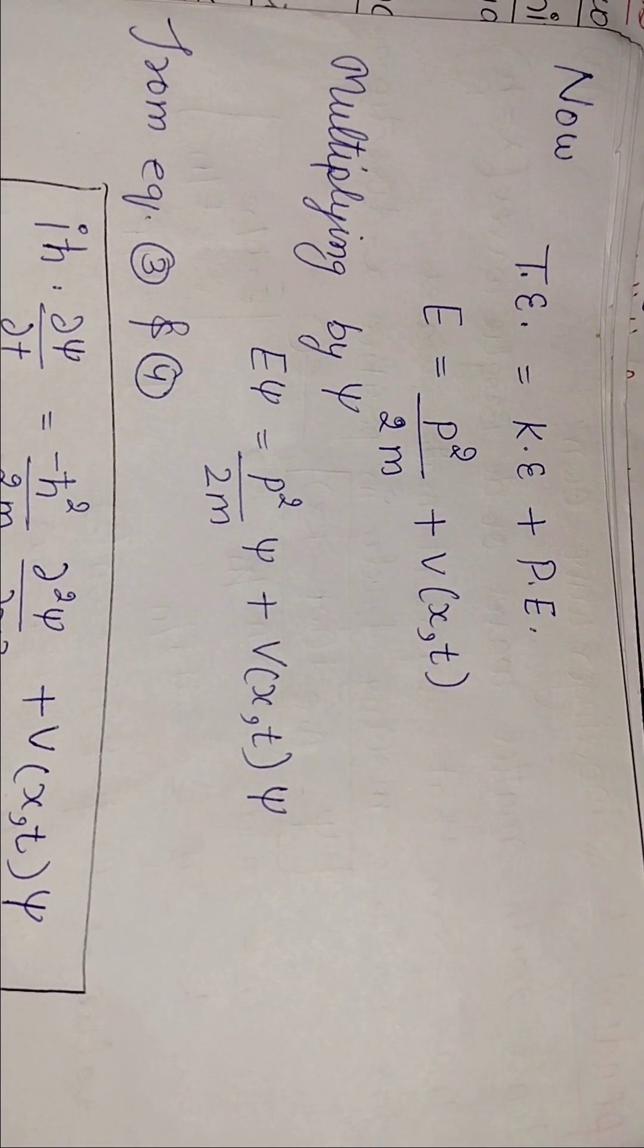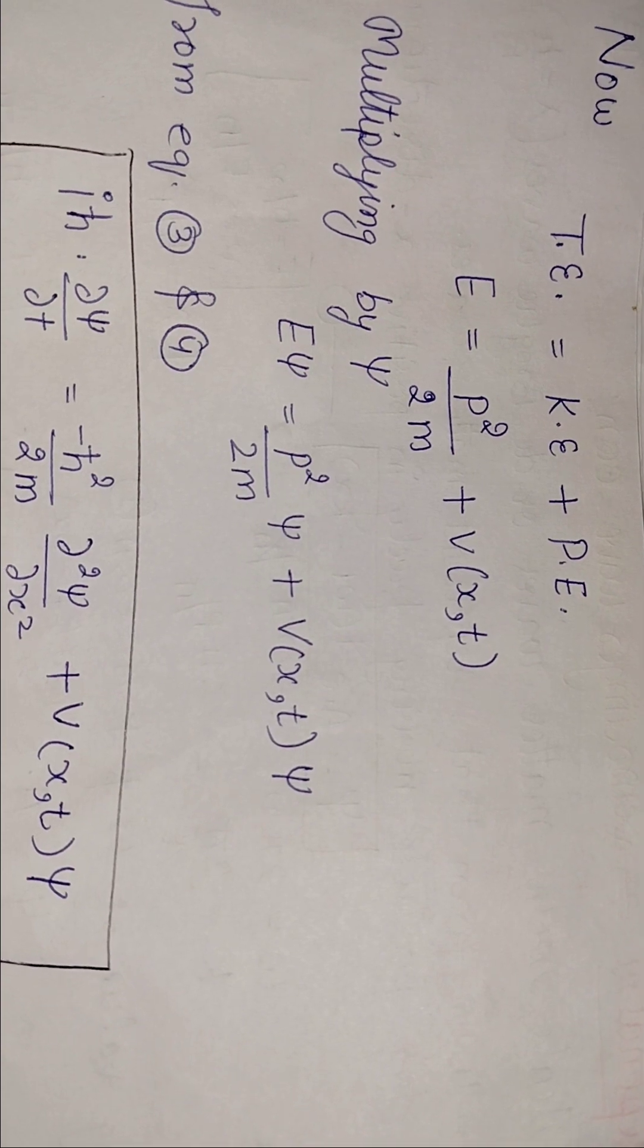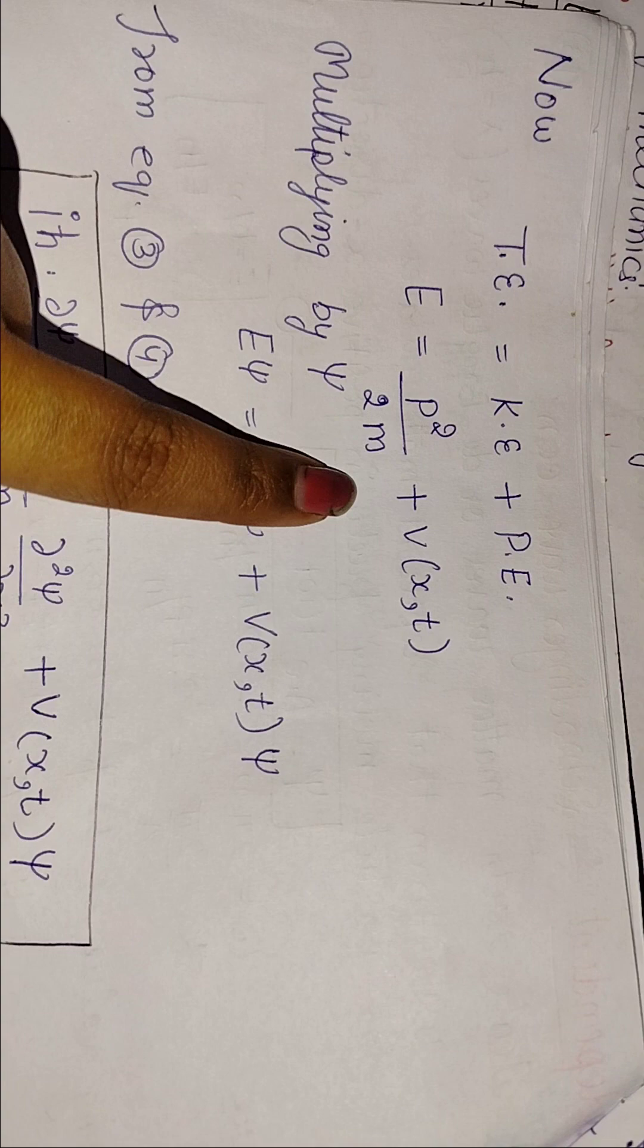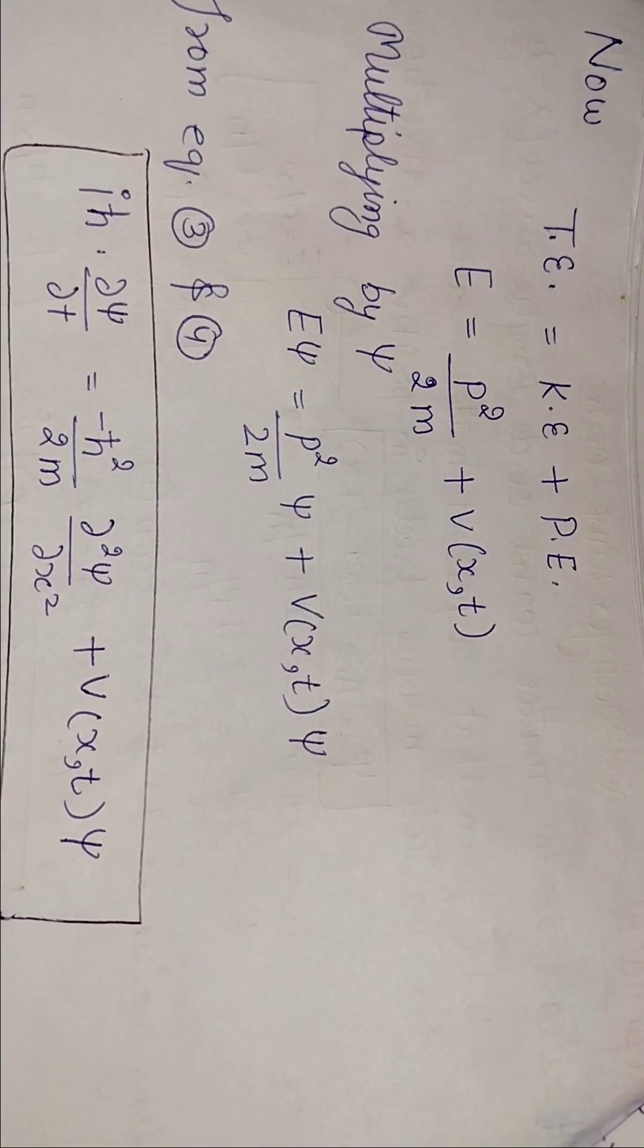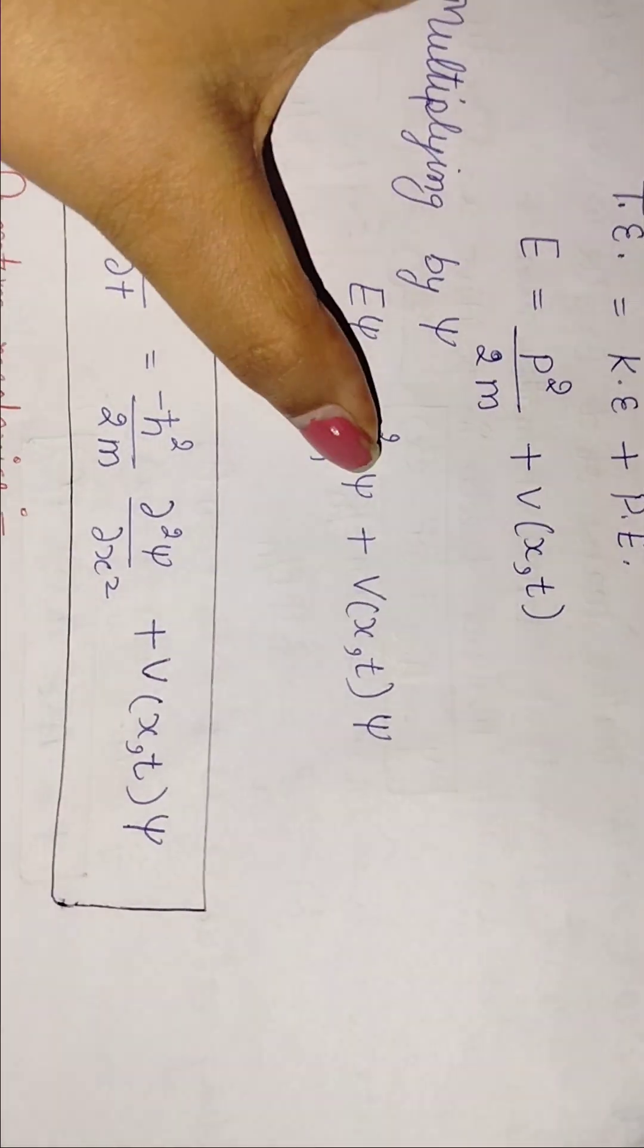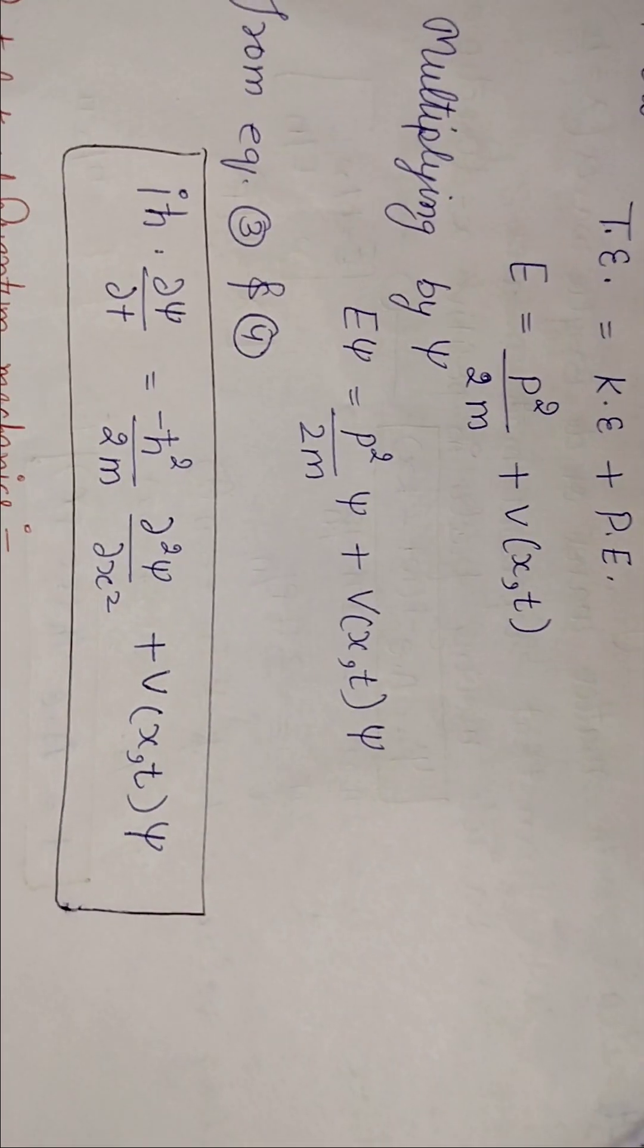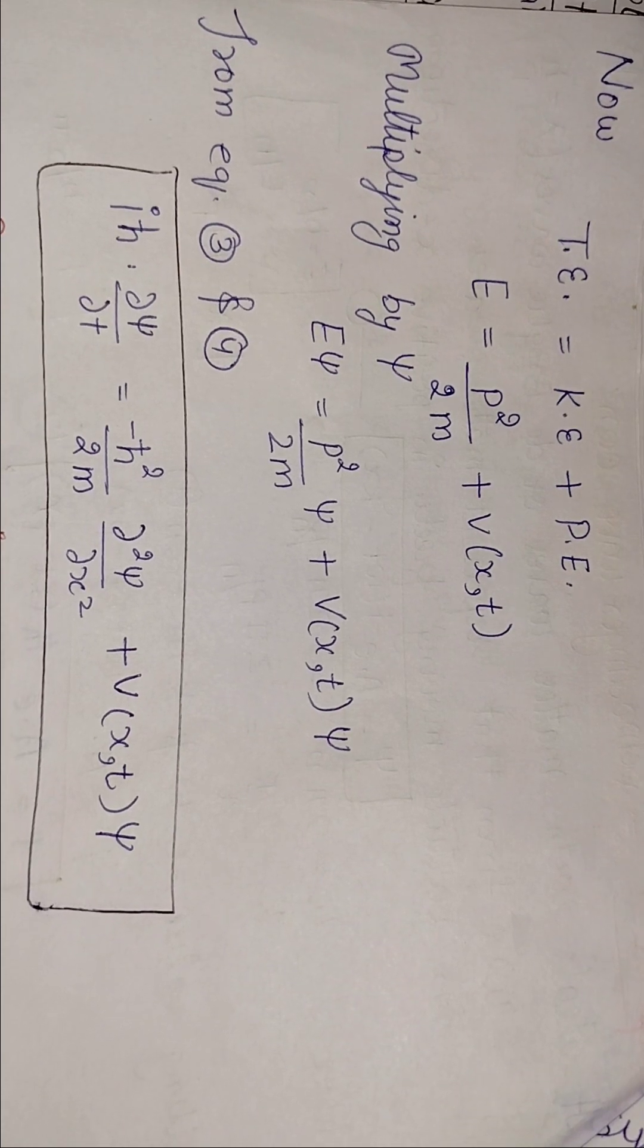Now, we know how much total energy is: kinetic plus potential energy. So we will fill the value of kinetic and potential energy and multiply with ψ. We have equation 4, what is E·ψ? We will put it here. P·ψ? We will put it here. And plus potential energy. So this is the time-dependent Schrödinger wave equation.